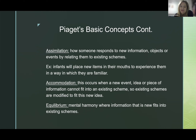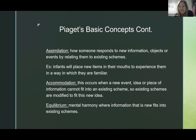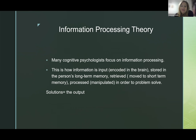Next is accommodation, which occurs when a new event, idea, or piece of information cannot exactly fit into an existing schema — so existing schemas are modified to fit the new idea. Next is equilibrium — mental harmony — when new items and information fit exactly into existing schemas. This is a desirable state.